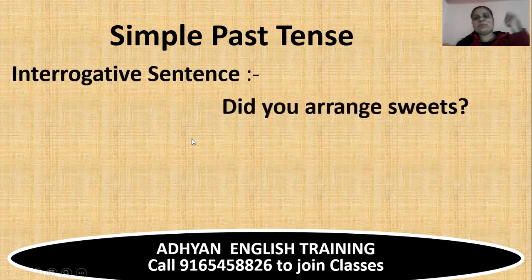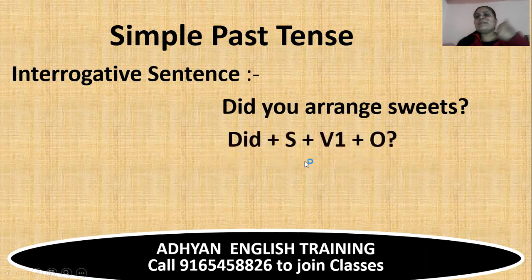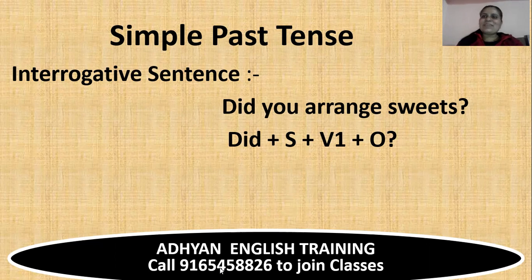Interrogative questions — how to ask questions: did you arrange sweets? Again: did plus subject plus verb first form plus object. If you have 'did,' then verb first form will come. So that is it about simple past tense. Peace.